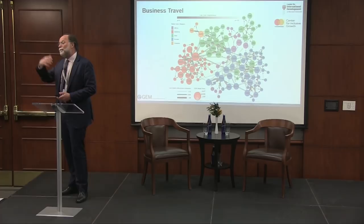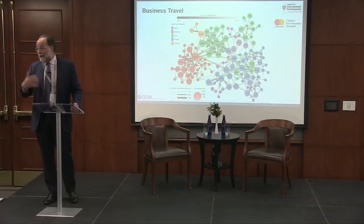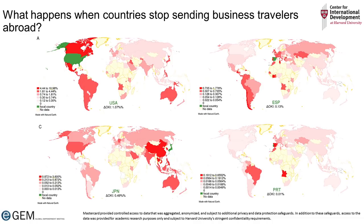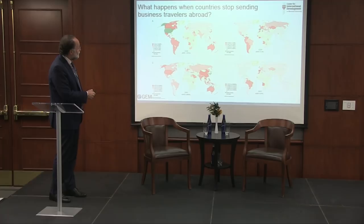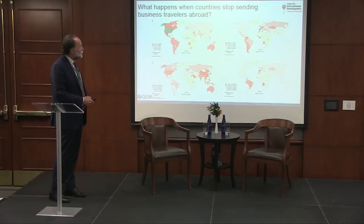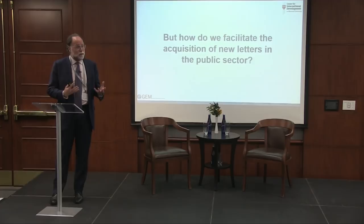We can use those estimated equations to ask: what would be the economic loss if people from one country stopped traveling to others? The countries in red are those that get hurt — for example, if the US stops traveling, Canada and Latin America are impacted. If Japan stops traveling, a different set of countries is affected. This shows that in order to do things in the world, you have to move brains around — it's not enough to move information through emails or FaceTime.